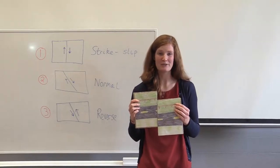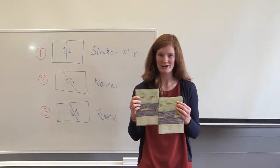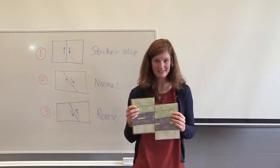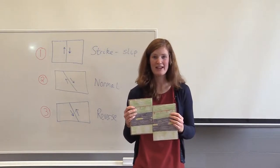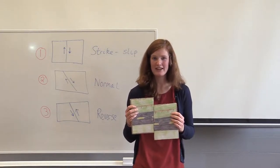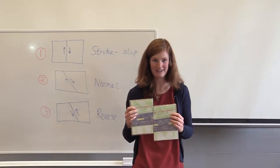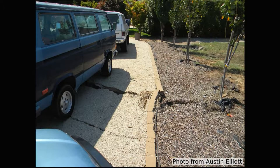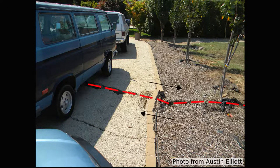A really exciting example of a transform plate boundary is the San Andreas fault. The earthquake I study is called the Napa Valley earthquake — it happened in 2014 in San Francisco, America. Here is a picture my colleague Austin took during this earthquake. You can see someone's drive with some damage. The fault has cut straight through the drive and the curb is now offset from each other because of this shear — because of this strike-slip fault.